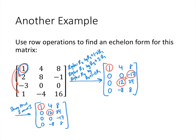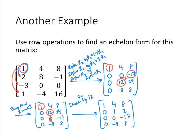Now our leading entries are 1 and 12. We need everything below that 12 to be a zero. Rather than dealing with fractions, it's easier to divide row 2 by 12. This is an optional step, but it makes the algorithm easier. 24 divided by 12 is 2, so dividing row 2 by 12 gives us 0, 1, 2 — nice whole numbers. It's a good idea when you have an awkward number in a pivot position to divide that whole row by it.